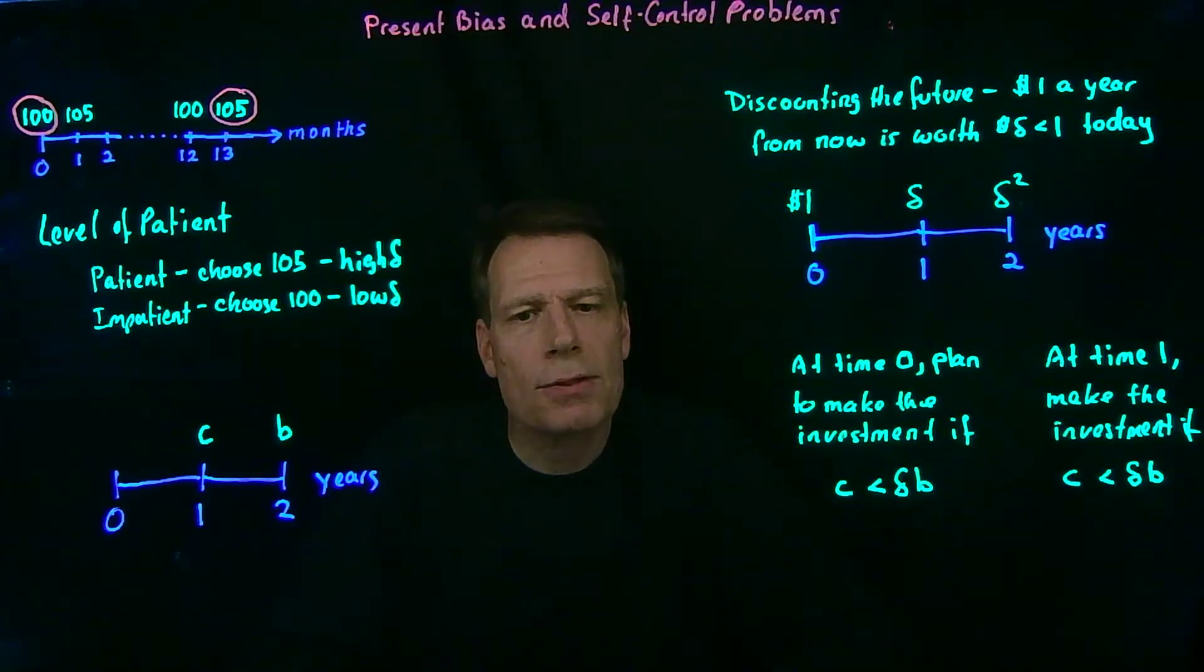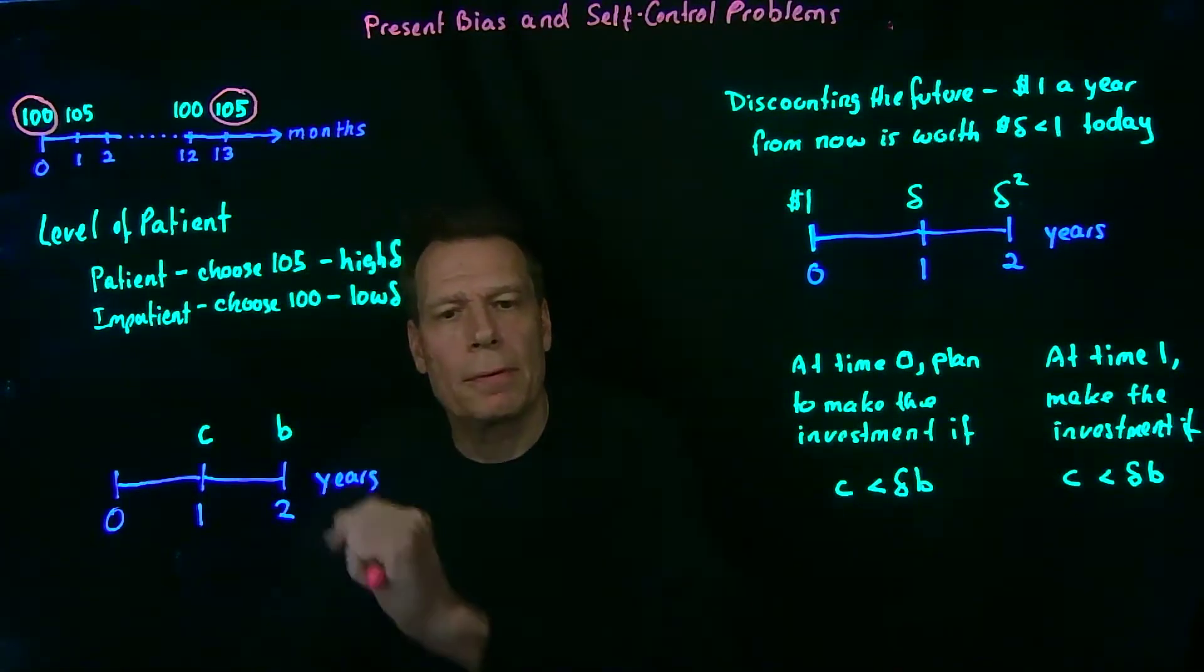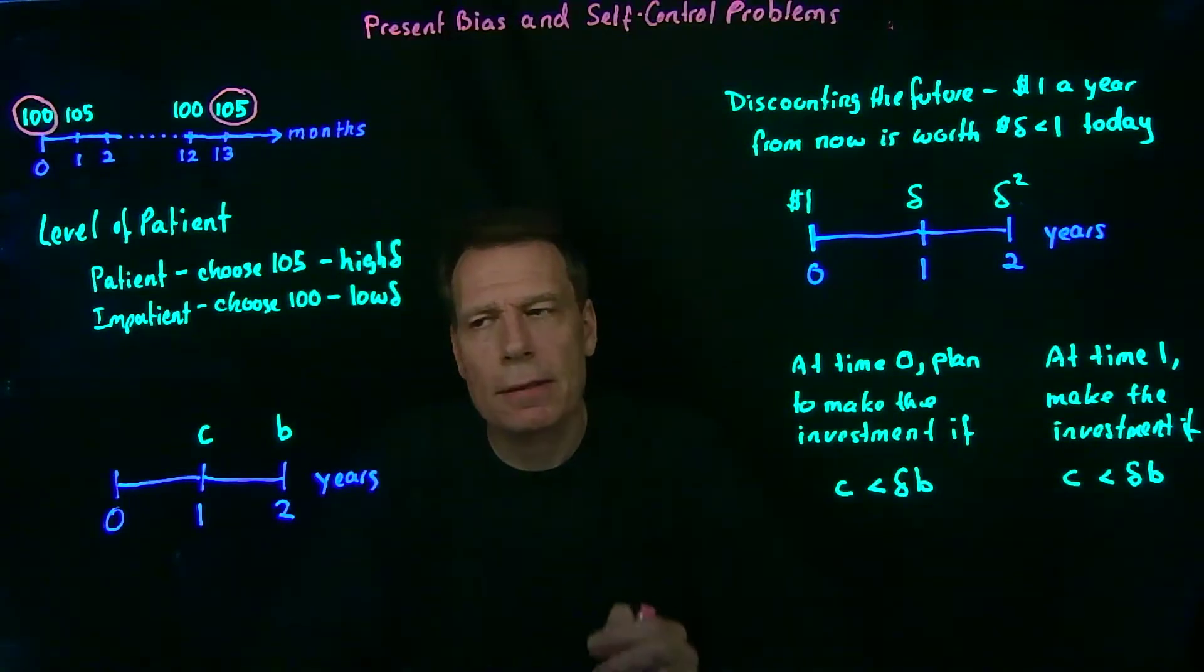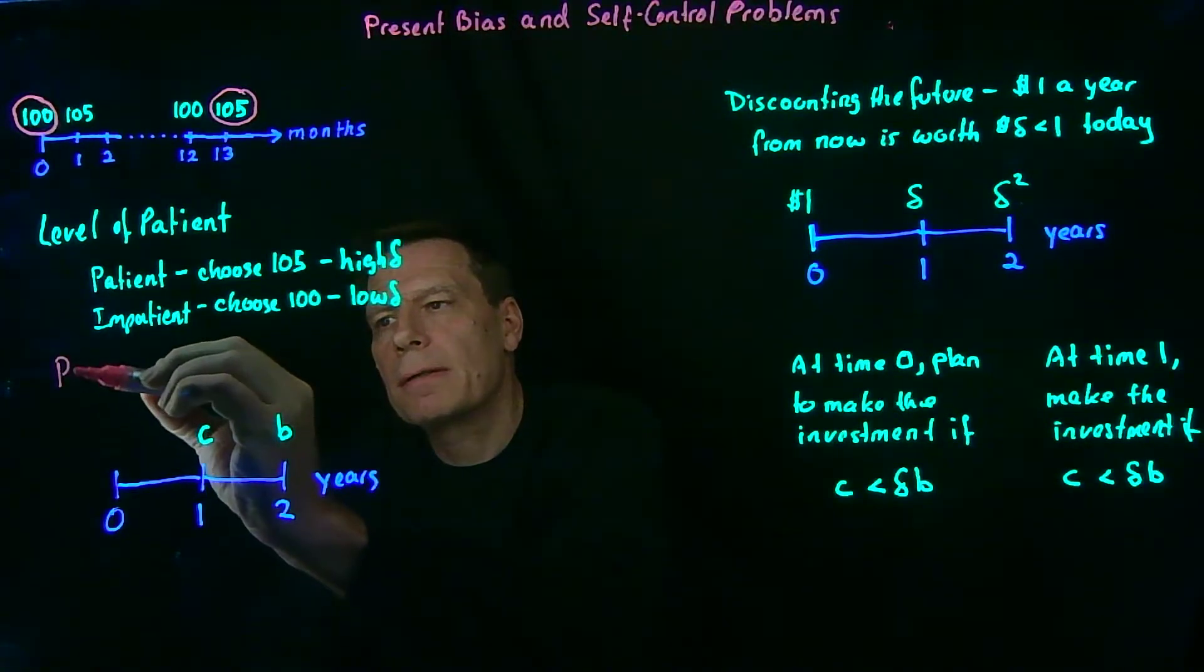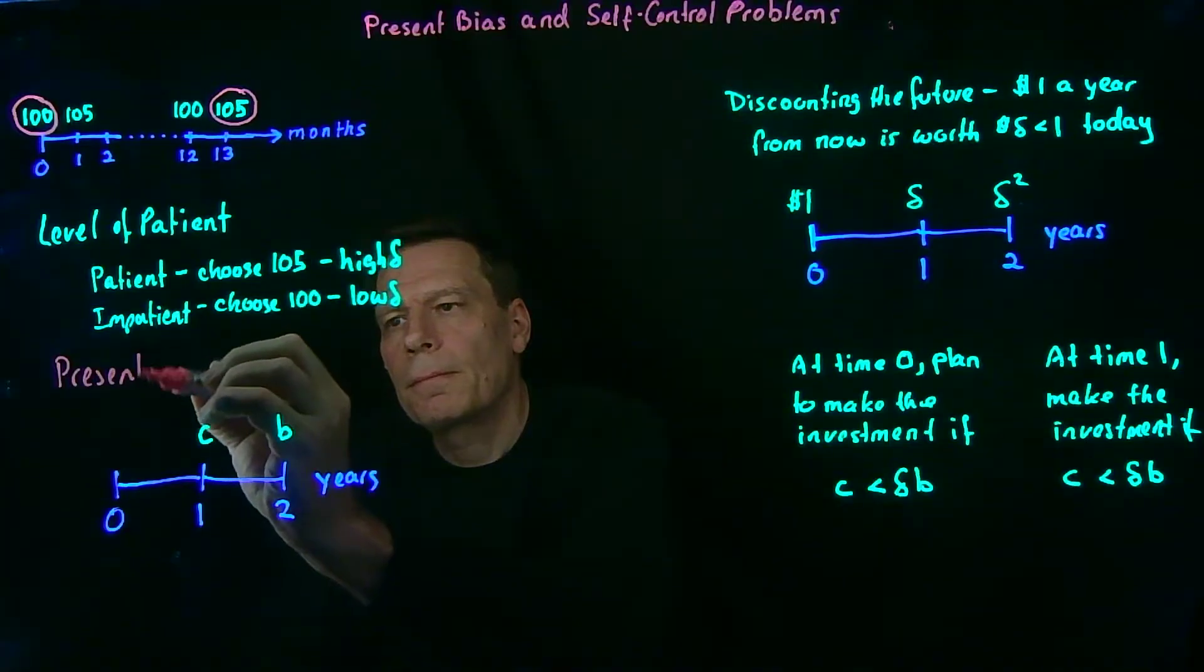And it's evidence of what we call present bias. When the future becomes the present, there's a bias towards being more impatient. And so the behavior isn't consistent over time. So when we see this reversal, when the future becomes the present, we call that present bias.